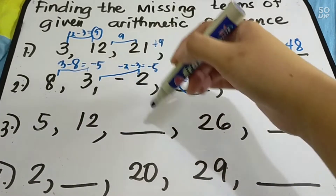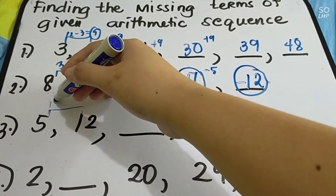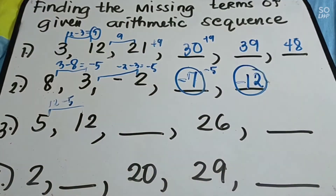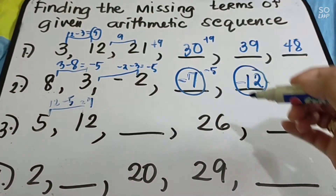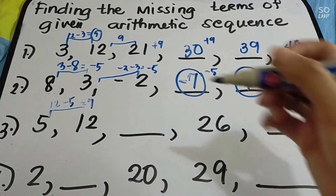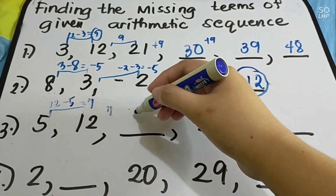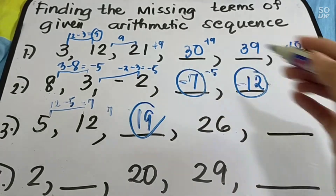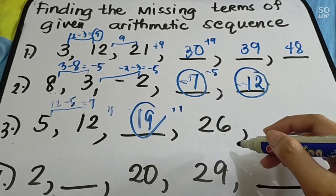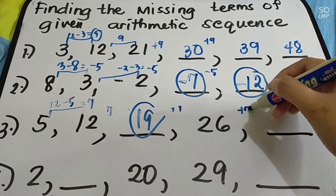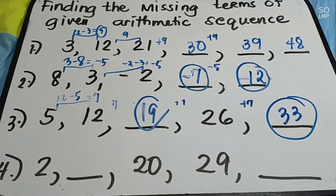Next: we have 5, blank, 26, and blank. We have 12 minus 5 = 7, so the common difference is 7. Since d = 7: 5 plus 7 = 12 — wait, 12 plus 7 = 19. So 19 is the missing term between 12 and 26. Check: 19 plus 7 = 26. Then 26 plus 7 = 33. So the missing terms are 19 and 33. We're done — we found the missing values.